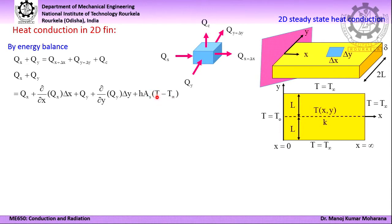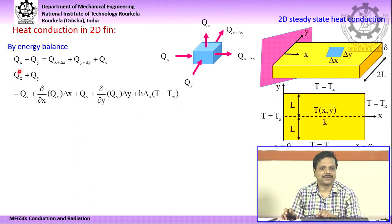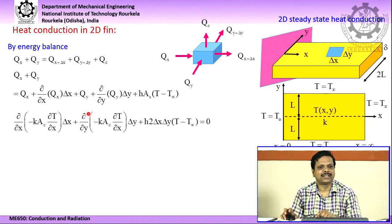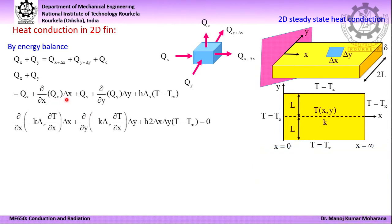The qx terms on both sides cancel each other; similarly, qy on both sides also cancel. What remains can be rewritten as: (∂/∂x of qx) times delta x plus (∂/∂y of qy) times delta y plus h times A times delta T equals 0. Now qx can be rewritten using basic heat conduction as minus k times A times dT/dx. Similarly, qy becomes minus k times A times dT/dy. Here A represents the area of cross-section through which heat transfer takes place by means of conduction, but please remember — the area in the x direction and the area in the y direction are not exactly the same because their dimensions are different.